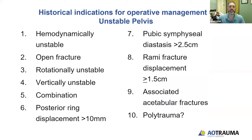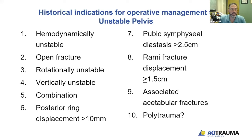These are historical indications for operative management, which basically comes down to having an unstable pelvic ring injury. So if they're hemodynamically unstable and the pelvis is the source of bleeding, open fractures, some rotationally unstable injuries, vertically unstable, combination pattern, historically posterior ring displacement greater than 10 millimeters, pubic symphyseal diastasis greater than 2.5 centimeters, rami fracture displacement at least 1.5 centimeters, associated acetabular fractures, and polytrauma.